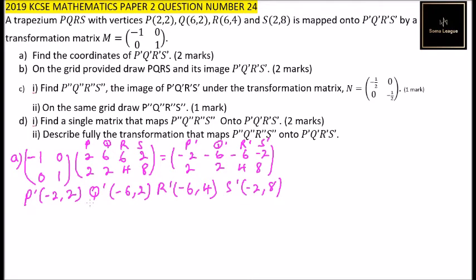Part C, roman numeral one: P''Q''R''S'' is the image of P'Q'R'S' under transformation matrix N = [-1/2, 0; 0, -1/2]. We multiply matrix N by the matrix formed by the coordinates of P'Q'R'S' to get the coordinates of P''Q''R''S'', just as we did in part A.